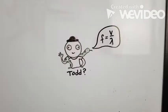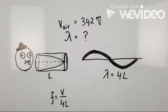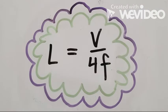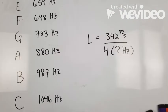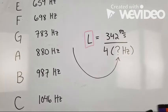We plug this into the equation from before to get F is equal to V over 4 times L. And since we're trying to find the length, we can rearrange it. So now we have L is equal to V over 4 times the frequency. From here, I researched the frequency for every note in the key of C. Then I could plug this frequency into the length equation to find how long the pipe needs to be in order to get a certain note.